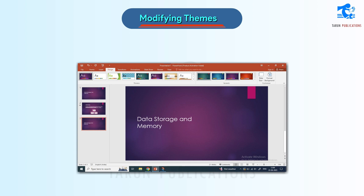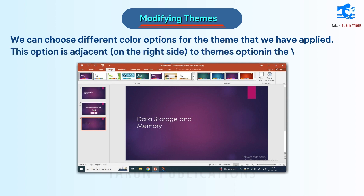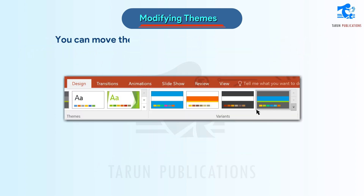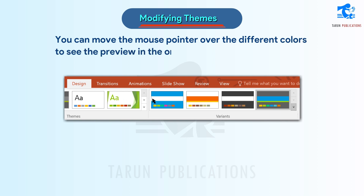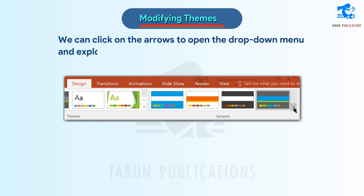Modifying themes. We can choose different color options for the theme that we have applied. This option is adjacent, on the right side, to the Themes option in the Variants group. You can move the mouse pointer over the different colors to see the preview in the original slide. We can click on the arrows to open the drop-down menu and explore other modifying options for the theme.